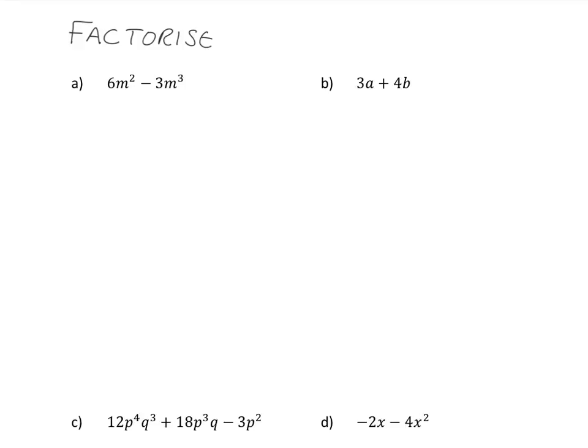Why don't you try factorizing 6m squared minus 3m cubed? Pause the video, try it now, and we'll go over it together. So you have 6m squared and you have 3m cubed. And you want to find the highest common factor.